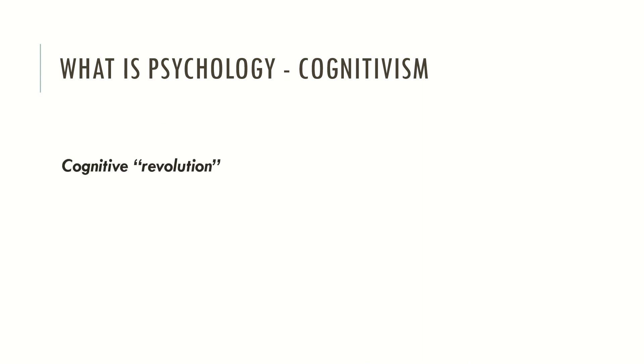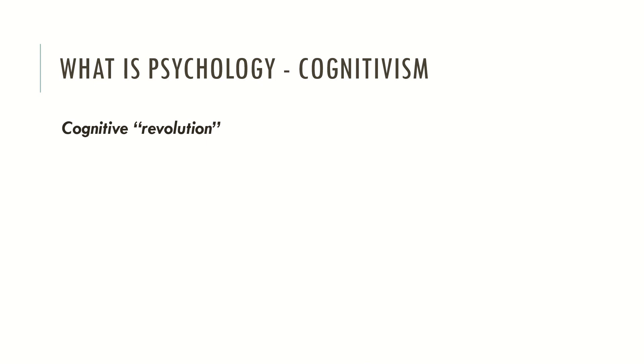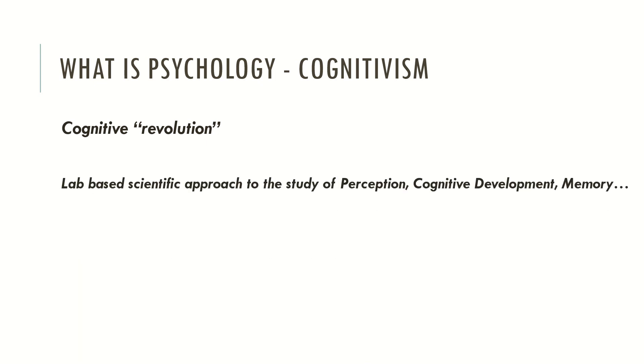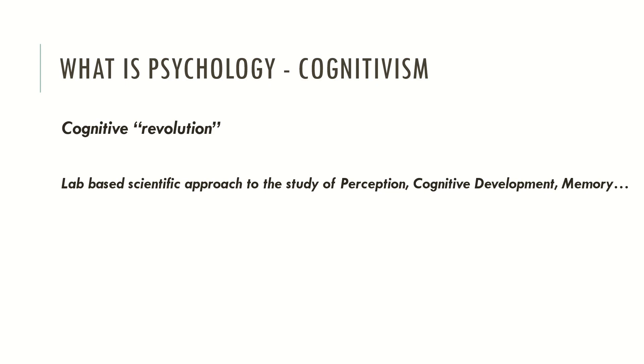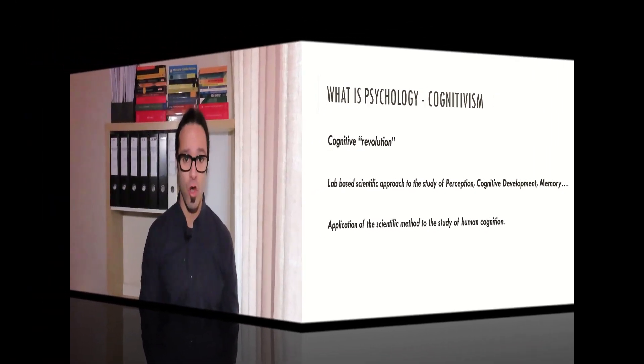This revolution is called the cognitive revolution. Starting in the 1960s, it adopted a scientifically-based approach to memory, perception, cognitive development, mental illness and much more. The cognitive perspective focused on mental processes such as memory, attention and decision making, and examined which mental mechanisms were responsible for cognitive processing.